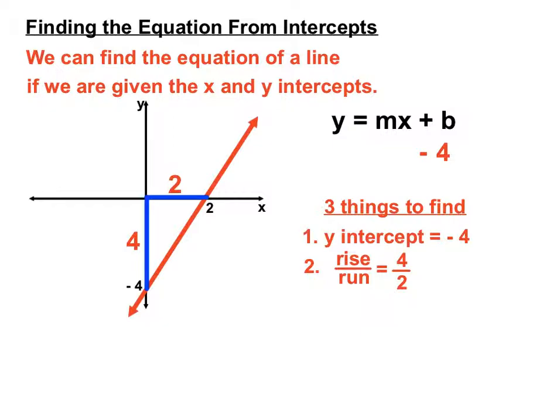So our rise over run is 4 over 2. Now anytime you've got a fraction, and this is in fraction form here, we should try and simplify. I think you can see that 2 can divide into the top and bottom there. So really we should be saying 2 over 1.